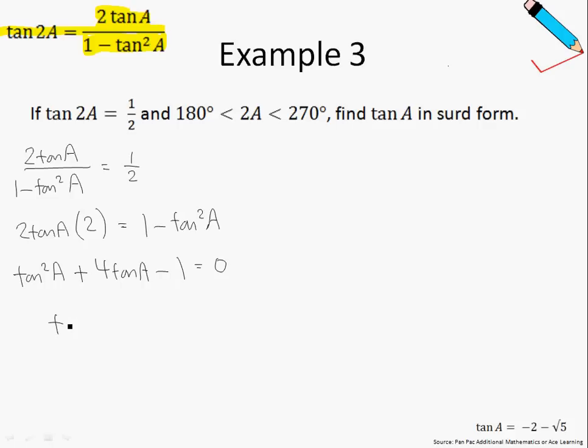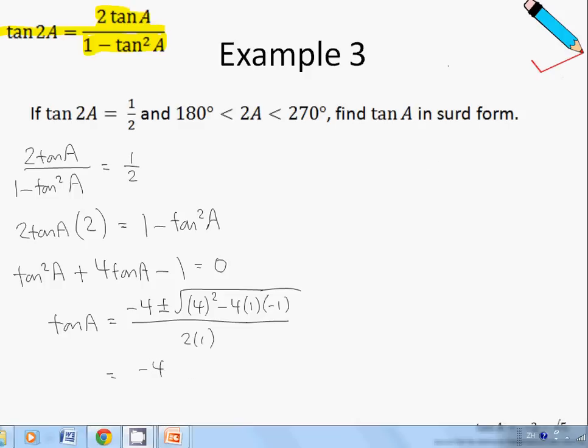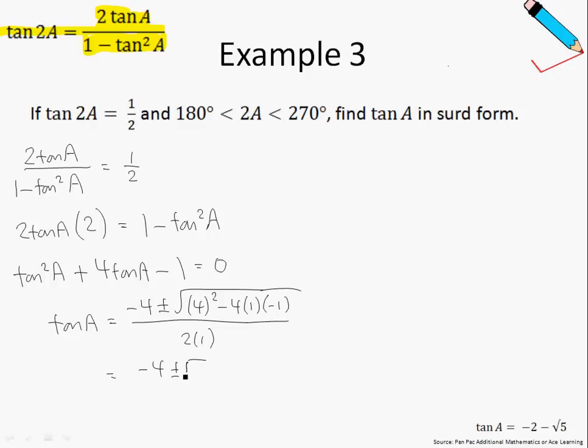Using our formula to evaluate quadratic equations, this will be negative B, which is negative 4, plus minus square root of B squared, so 4 squared, minus 4AC over 2A. Evaluating this, I will just arrive at negative 4 plus minus root of 20 over 2. We can further simplify this. Tangent A is equal to negative 4 plus minus 2 root 5 over 2. Simplifying this, I will just arrive at this expression, of which one of the answers will be eliminated or rather rejected.